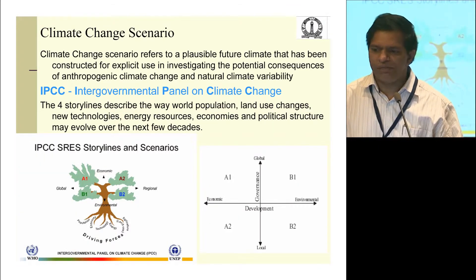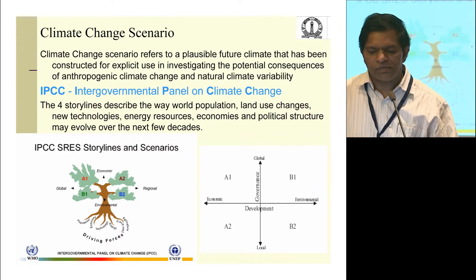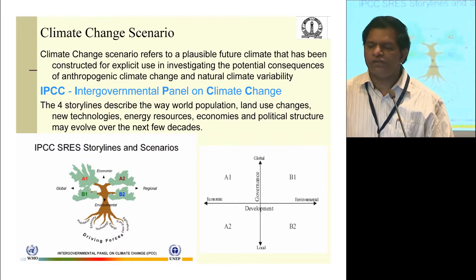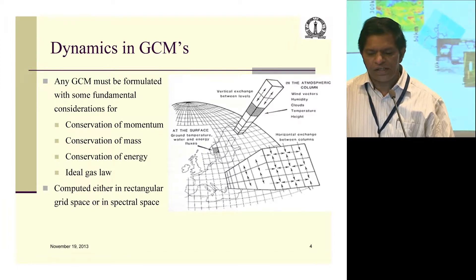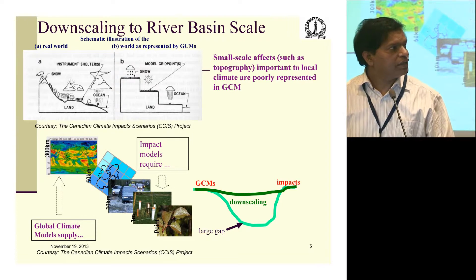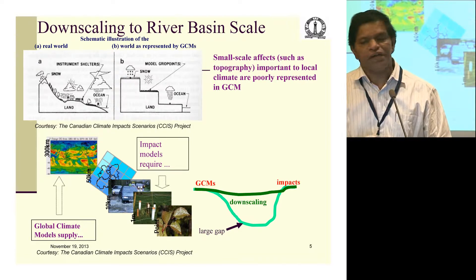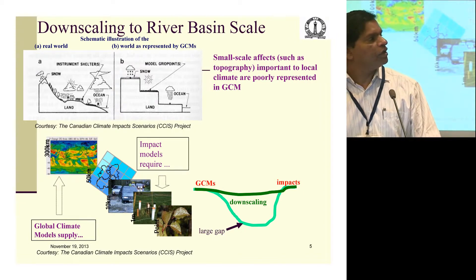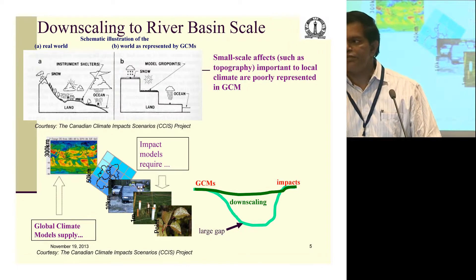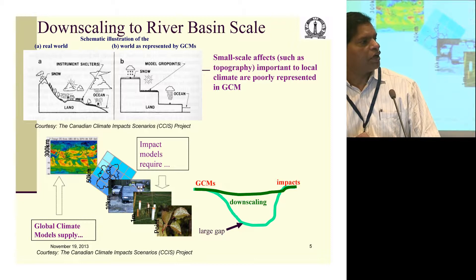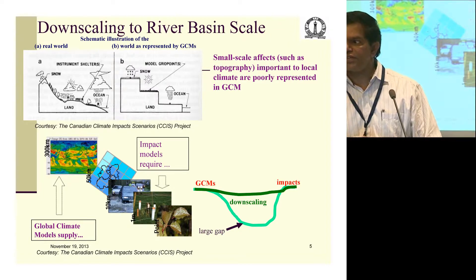I don't need to go through all the details about climate change scenarios — you're all very much aware of them. When you have a scenario and need climate variable information corresponding to it, we generally go for GCMs. One major limitation of GCM output is scale: what we require for hydrology is at a very fine spatial resolution. GCMs are available at approximately 300km x 300km, whereas for hydrology we prefer 50km resolution, and for urban hydrology we require much finer spatial resolution.